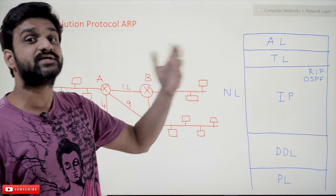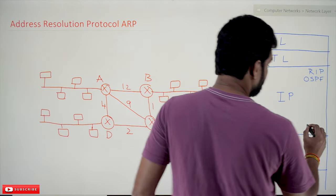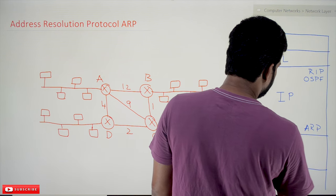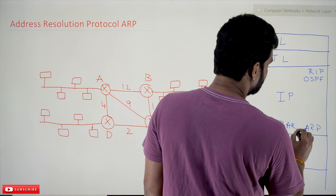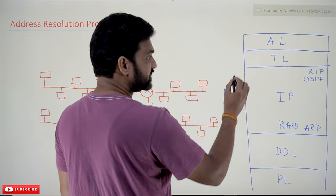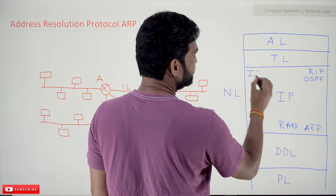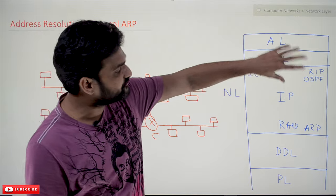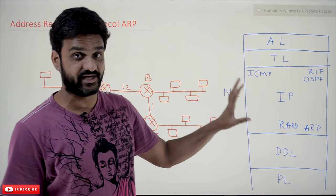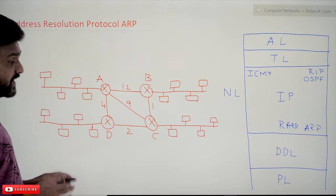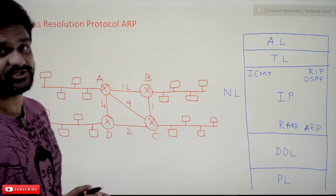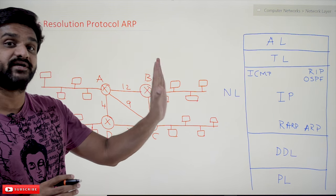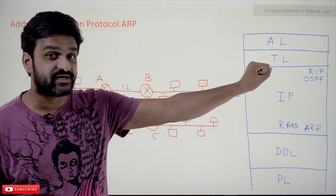The network layer also has other protocols like ARP — Address Resolution Protocol. The next one is RARP, which we'll cover in the next video. We also have ICMP — Internet Control Message Protocol. These are all the different protocols in the network layer. Now, what is the job of ARP? It is going to resolve addresses — if we have an IP address, we are going to get the MAC address.